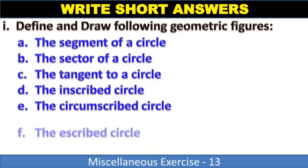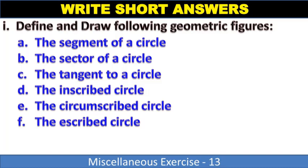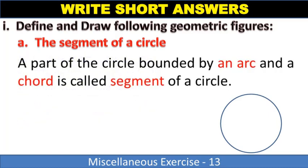Sector of a circle, tangent to a circle, inscribed circle, circumscribed circle, ascribed circle. Part A: segment of a circle. This is a circle, and the segment part of the circle bounded by an arc and a chord is called segment of a circle.